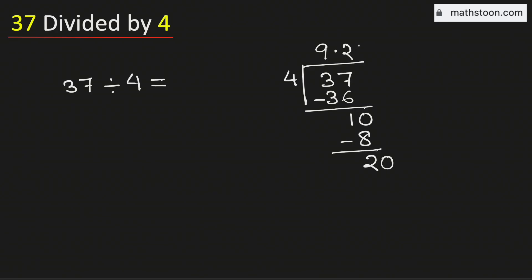And we know that 4 times 5 is 20. Subtract, we get 0. As we have obtained the number 0, so we will stop.